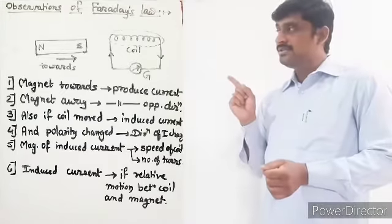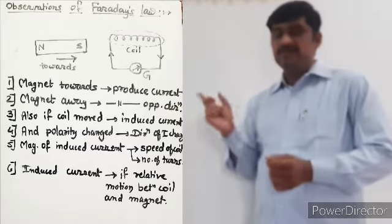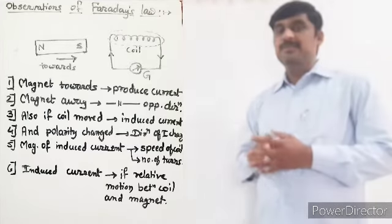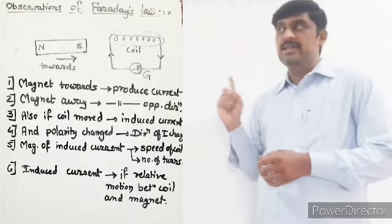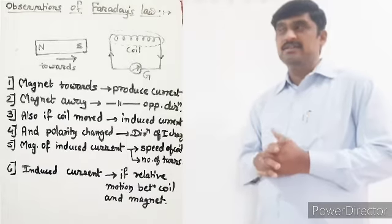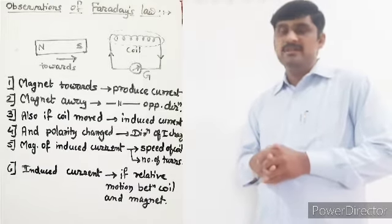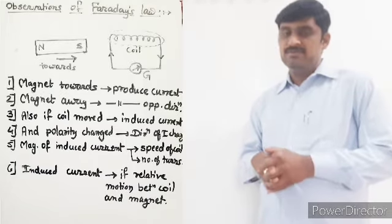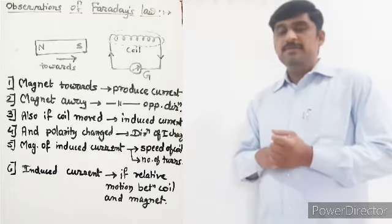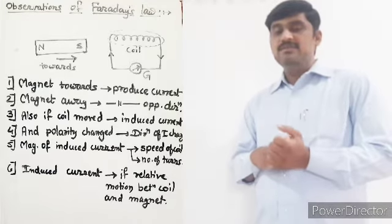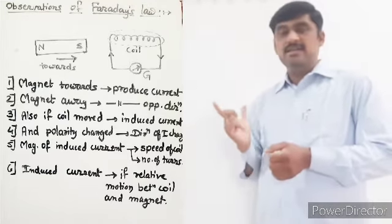When the magnet is moved a bit far — that is, away from the coil — the induced current is in the opposite direction, meaning the induced current is to the right.